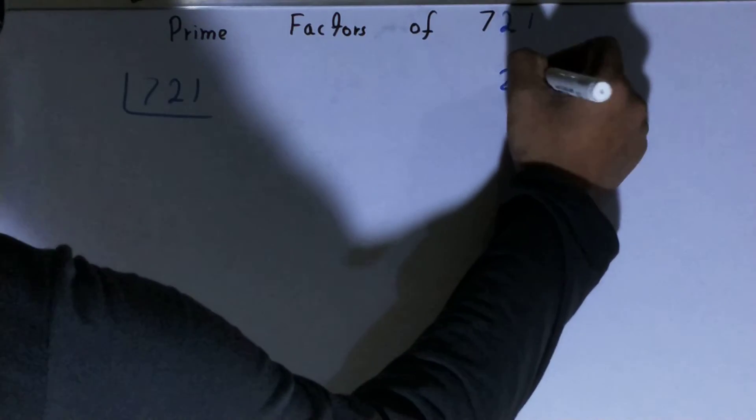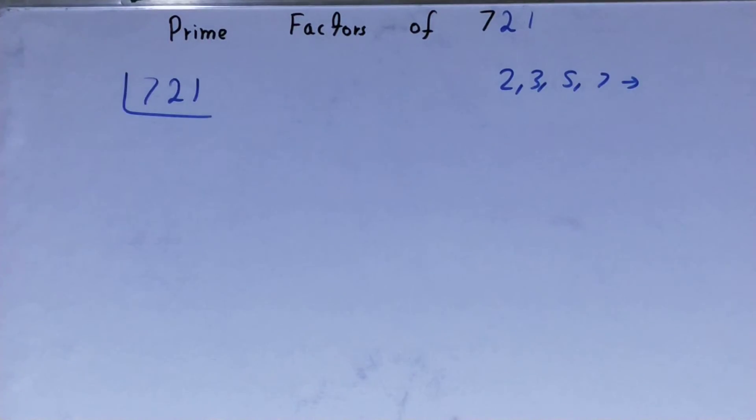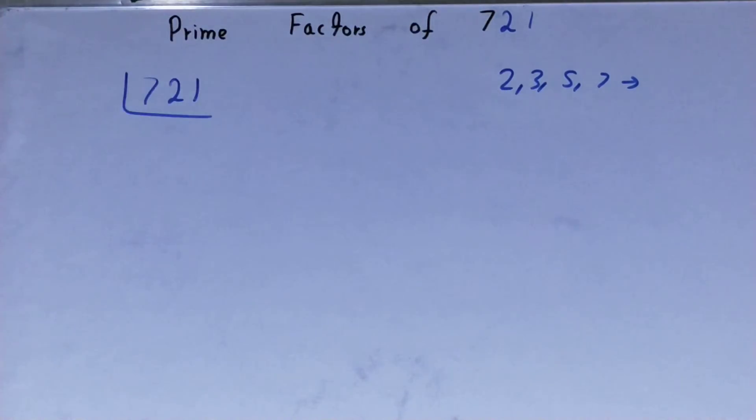Like 2, 3, 5, 7, and so on. We'll be starting with the lowest prime number we have, that is 2. Is the number 721 divisible by 2? Clearly not, because 721 is an odd number.